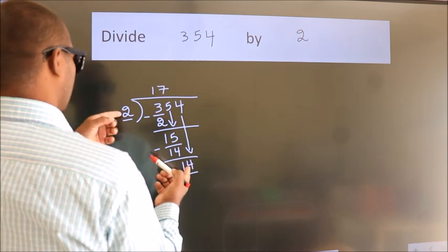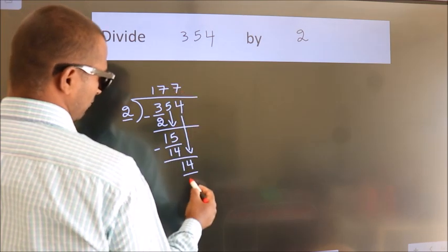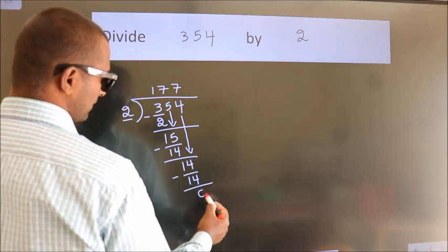When do we get 14? In 2 table. 2 7s, 14. Now, we subtract. We get 0.